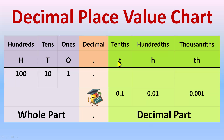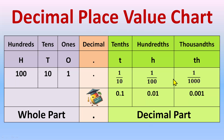Before decimal we use capital letter abbreviations and after decimal we use small letters. So this is Tens (capital T), Hundreds (capital H), Thousands (capital TH). We can also express the decimal places in fraction form: if the denominator is 10 we call it tenths, meaning one-tenth; if the denominator is 100, it's hundredths — one over hundred; denominator 1000 is thousandths — one over thousand.